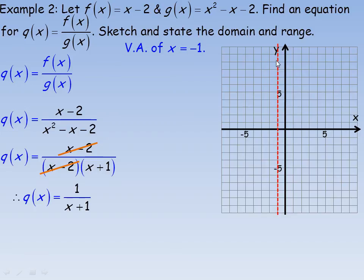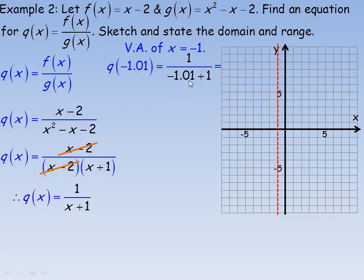To understand behavior near the asymptote, we test x equals negative 1.01, just to the left of x equals negative 1. The denominator becomes negative 1.01 plus 1 equals negative 0.01, and 1 divided by negative 0.01 equals negative 100. So as x approaches negative 1 from the left, the function value approaches negative infinity — the graph goes very far downward on the left side of the asymptote.